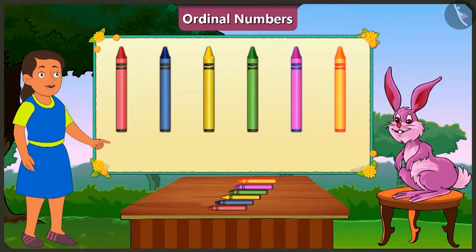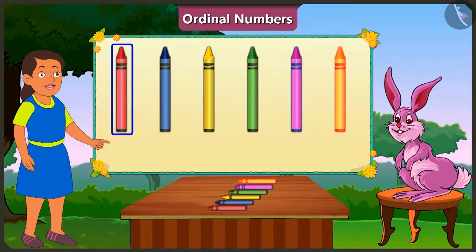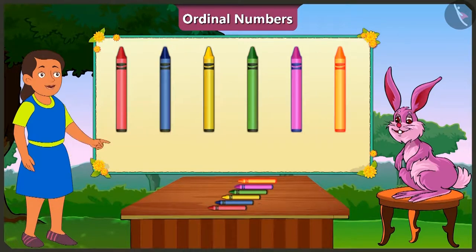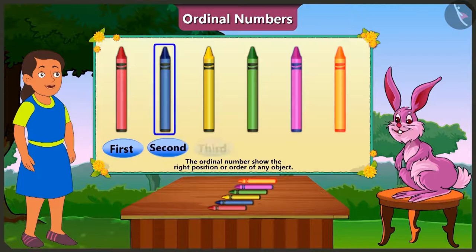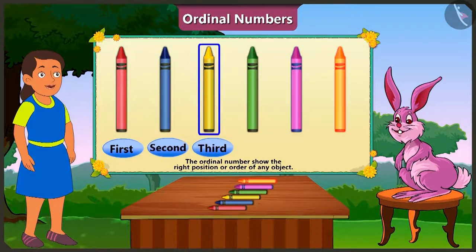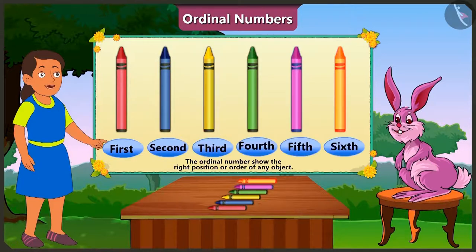Means, if we want to count objects, we say 1, 2, 3. Got it! And if we have to tell the position or place of objects in a line, then we say 1st, 2nd, 3rd — ordinal numbers.